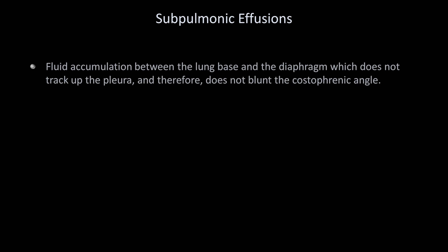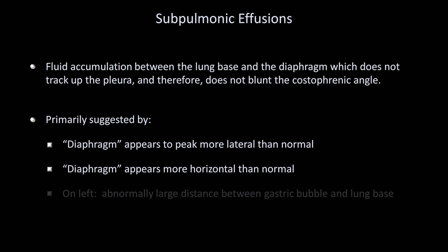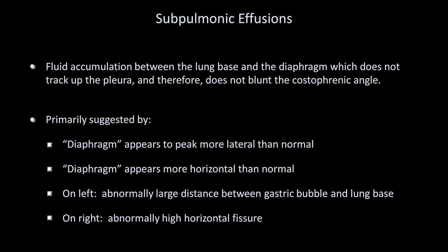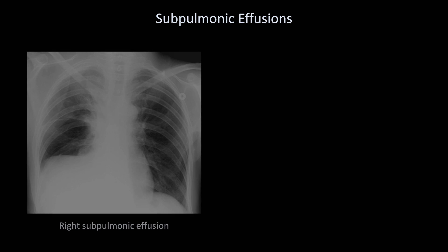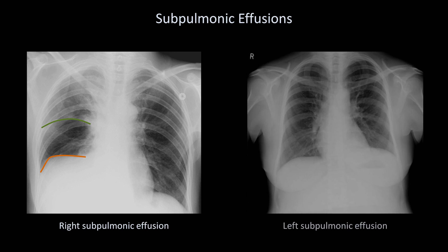There are two subtypes of a pleural effusion that can easily be mistaken for something else. The first subtype is called a subpulmonic effusion. Fluid accumulation occurs between the lung base and the diaphragm and does not track up the pleura, so it does not blunt the costophrenic angle. This is primarily suggested by the pseudodiaphragm appearing to peak more laterally and appearing more horizontal than normal. On the left side, there may be an abnormally large distance between the gastric bubble and lung base, while on the right side there may be an abnormally high horizontal fissure. Notice how the diaphragm is more horizontal than normal and appears to have a very lateral peak, and the horizontal fissure is very high up in the thorax, implying that the lung is being compressed from below.